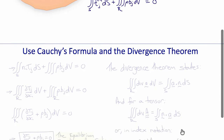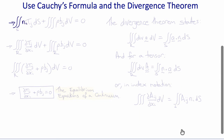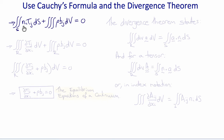Now we can use Cauchy's formula and the divergence theorem to simplify these integral equations and turn them into differential equations. First, we use Cauchy's formula so that the surface tractions T^N become N_i T_ij, so the previous equation becomes the surface integral over S of N_i T_ij with respect to S, plus the volume integral over R of rho times B_j with respect to V, equal to zero.